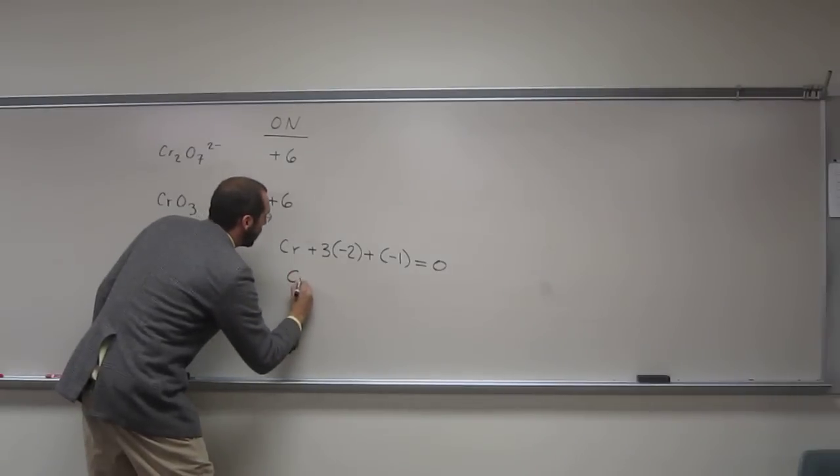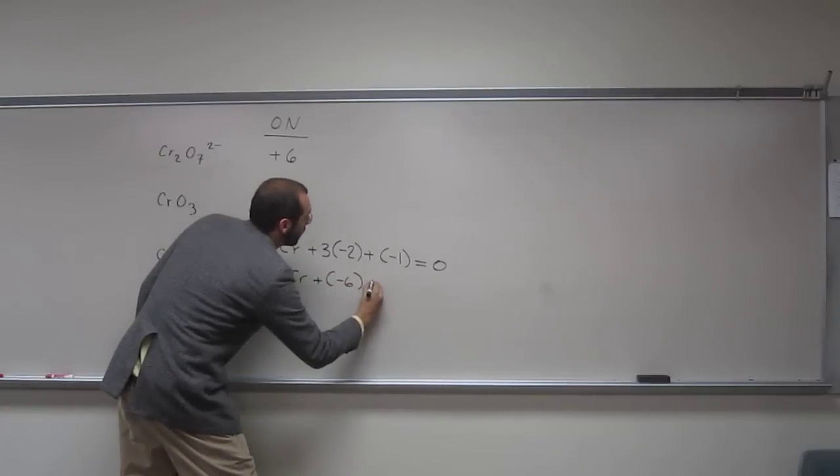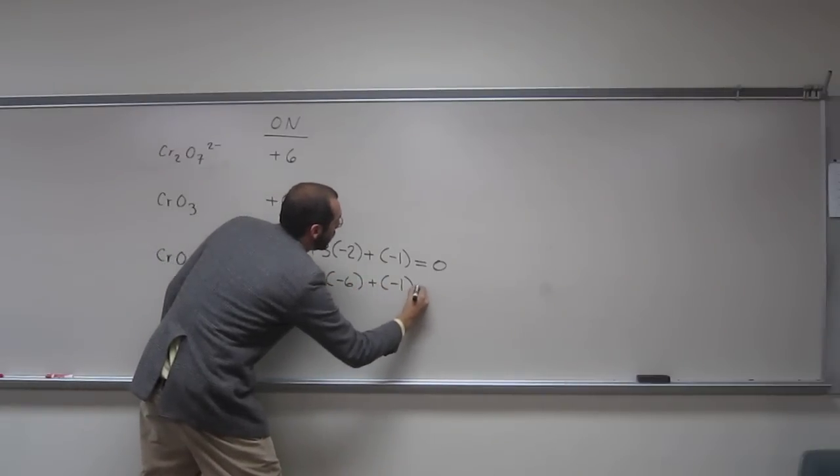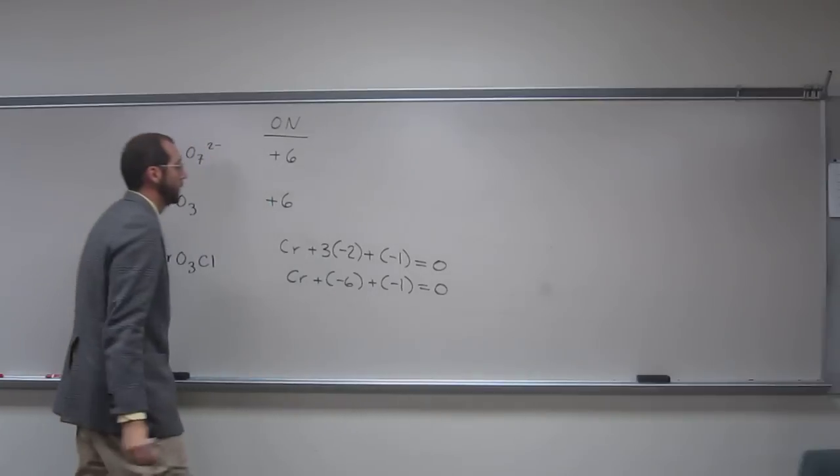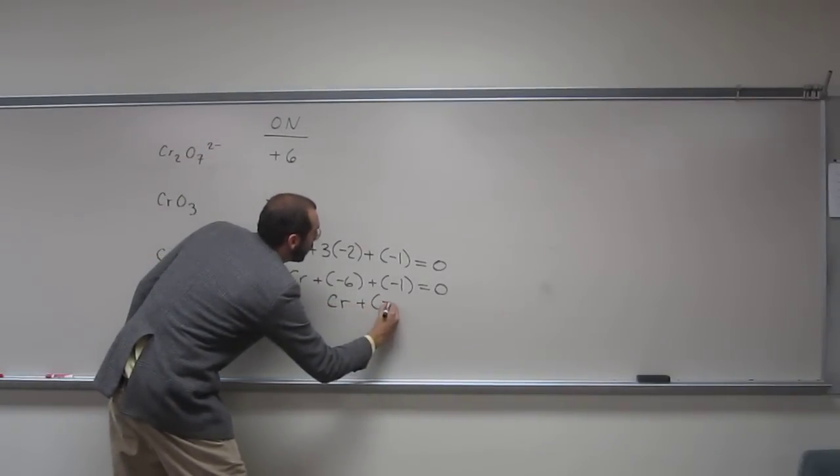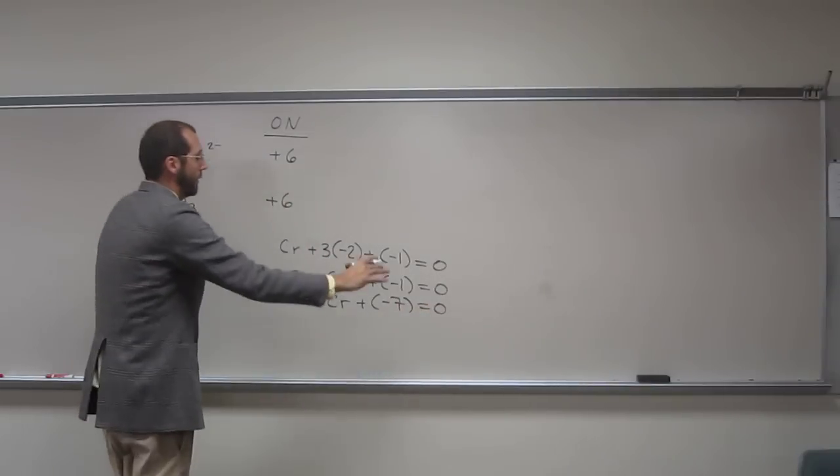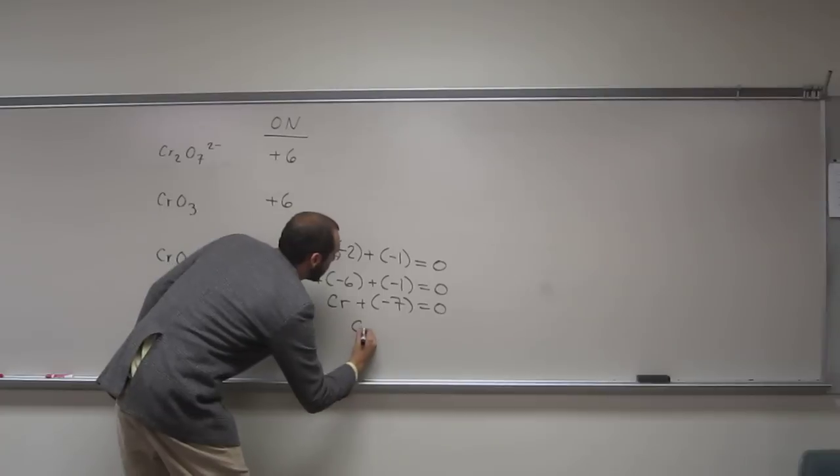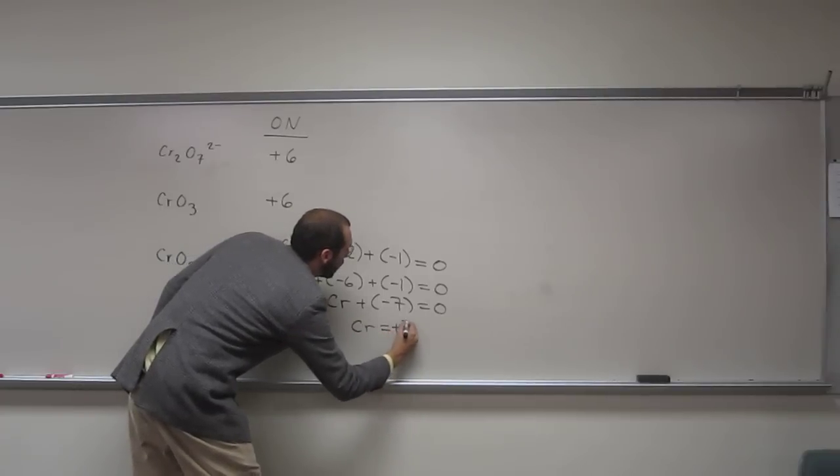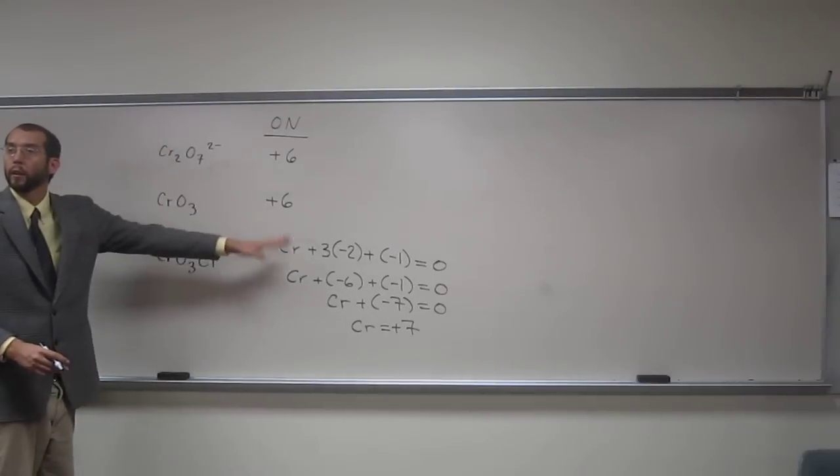So chromium plus minus 6 plus minus 1 equals 0. So chromium plus minus 7 equals 0, add 7 to both sides, chromium equals plus 7. Can I erase that one?